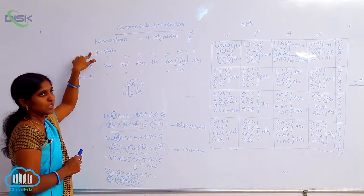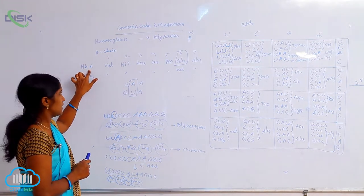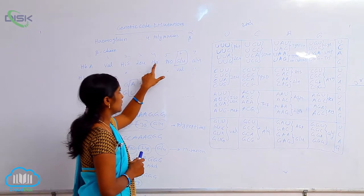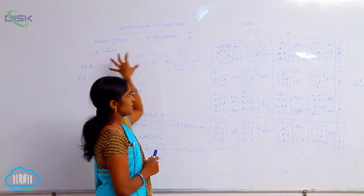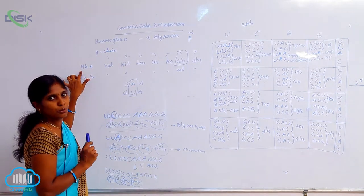In the beta chain, normal hemoglobin - a normal hemoglobin person has the amino acids valine, histidine, leucine, threonine, proline, glutamic acid, glutamic acid. This is the series of amino acids present in normal hemoglobin.